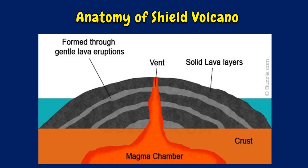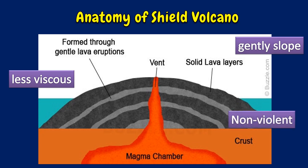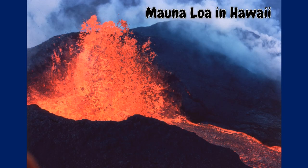A shield volcano is a type of volcano usually built almost entirely of fluid lava flows. They have very gentle slopes and are developed horizontally. Shield volcanoes are built by effusive eruptions which flow out in all directions and almost never have violent eruptions, with basic lava simply flowing out. Examples of shield volcanoes are commonly found in Hawaii: Kilauea and Mauna Loa.